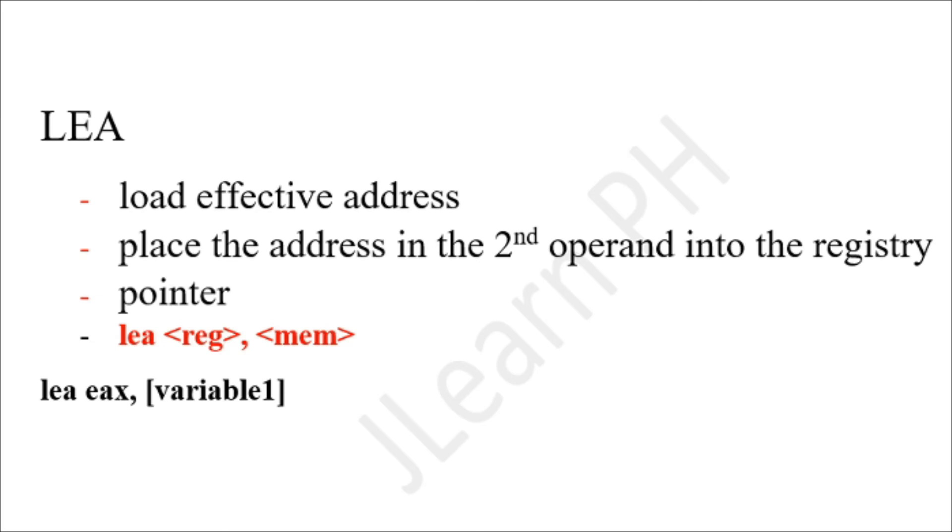For example, you have LEA EAX, variable1. What this basically does is that the value in variable1 is placed in EAX. If you put square brackets inside the variable, it basically gets the value inside that variable.